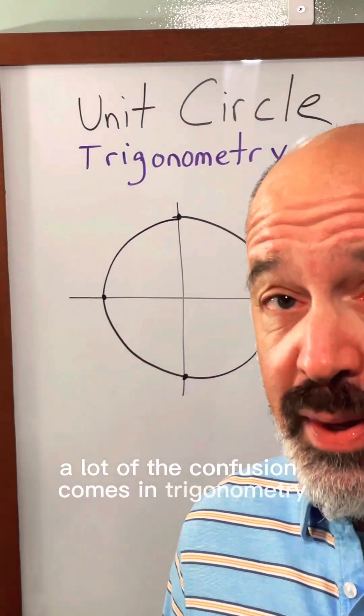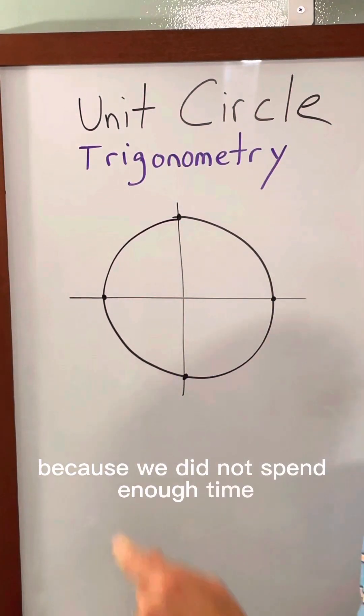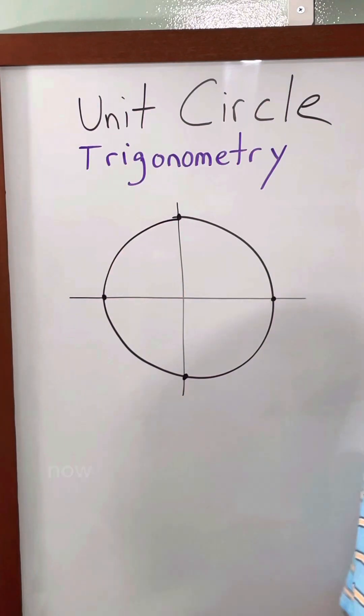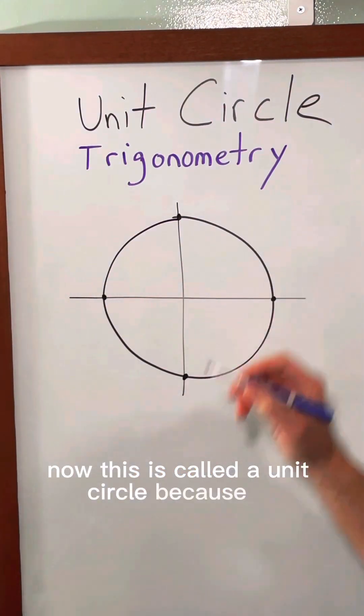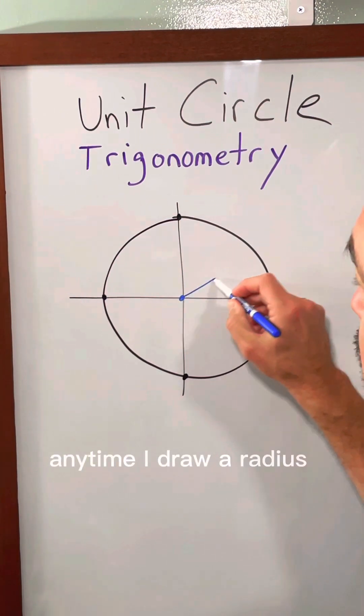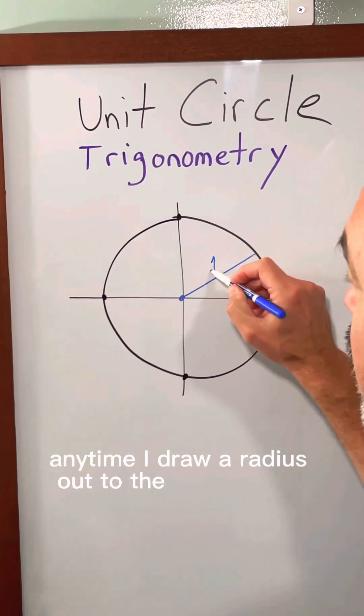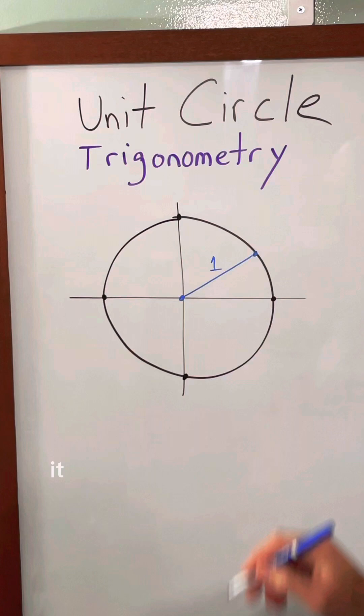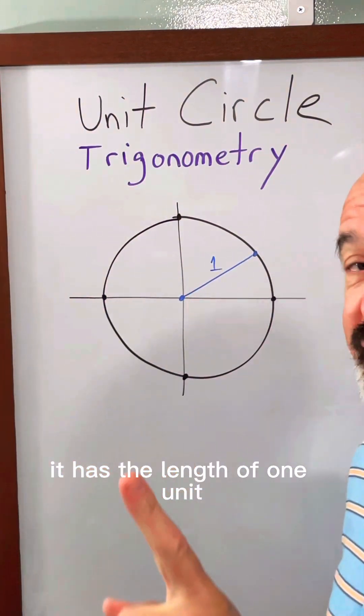A lot of the confusion comes in trigonometry because we did not spend enough time learning about a unit circle. Now this is called a unit circle because if this is the center of the circle, anytime I draw a radius out to the edge of the circle it has a length of one unit.